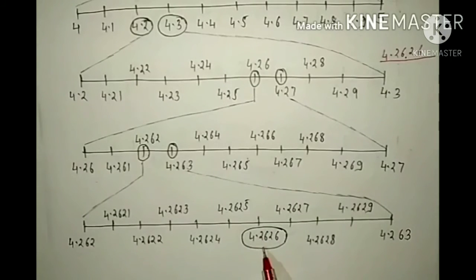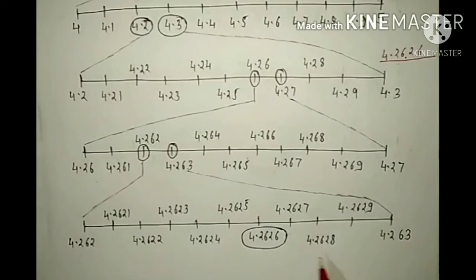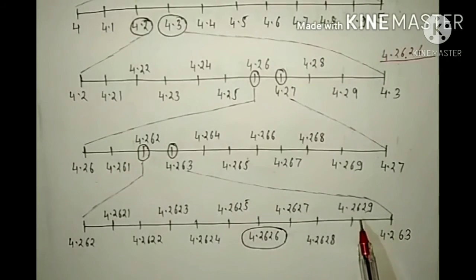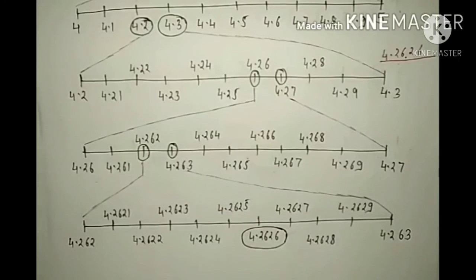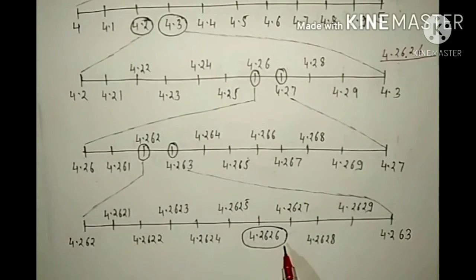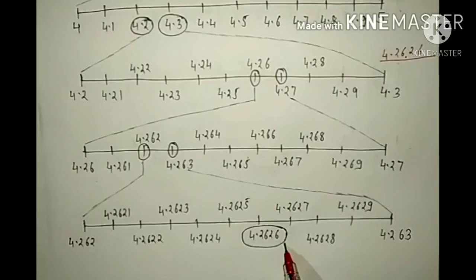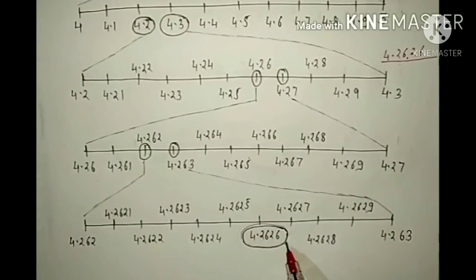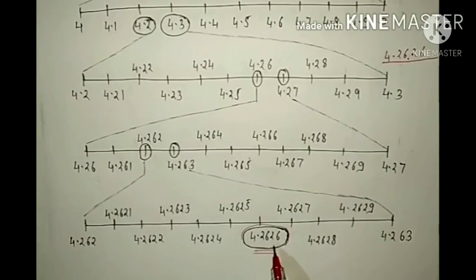Then 4.2626, then 4.2627, then 4.2628, then 4.2629. After that 4.263 comes. So which number do we need? We need 4.2626. Mark this number in a circle. This is our answer: 4.2626.